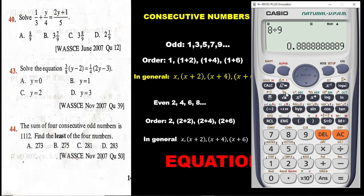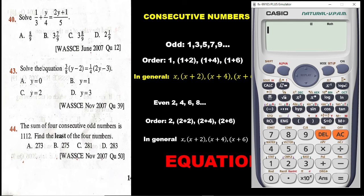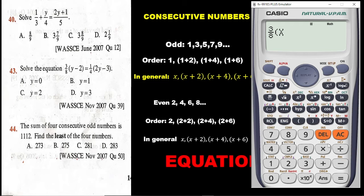Let's clear the calculator and solve the next question: solve the equation 3 over 8 bracket open y minus 2 — we change y to x. Click the fraction button, press 3, go down, press 8, move out of the denominator. Bring the bracket open, press alpha x, then minus 2, then close the bracket. Then the equal sign: press alpha then the calc button.